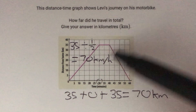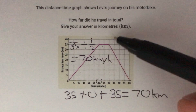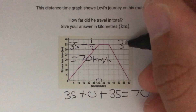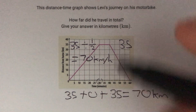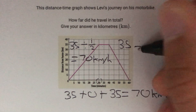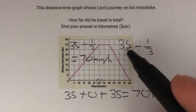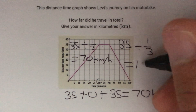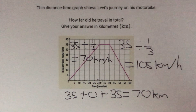In the middle part he's traveling 0 kilometers per hour because he's not moving. Then in the final part he travels back 35 kilometers, and this time it takes him from 40 minutes to 60 minutes — so 20 minutes, or a third of an hour. So we do 35 divided by a third, which gives us 105 kilometers per hour.